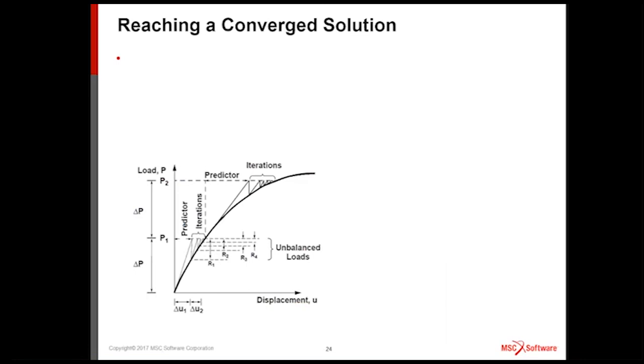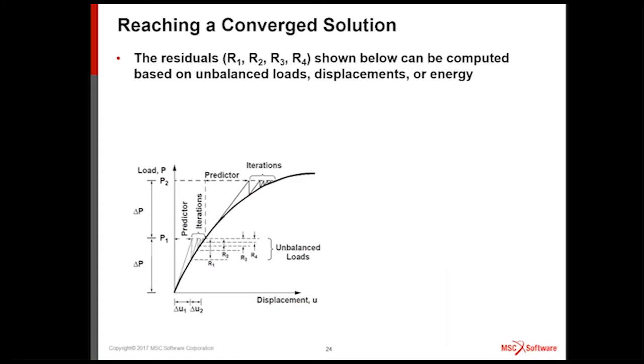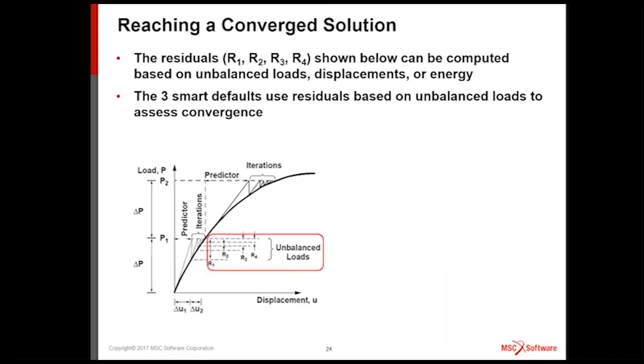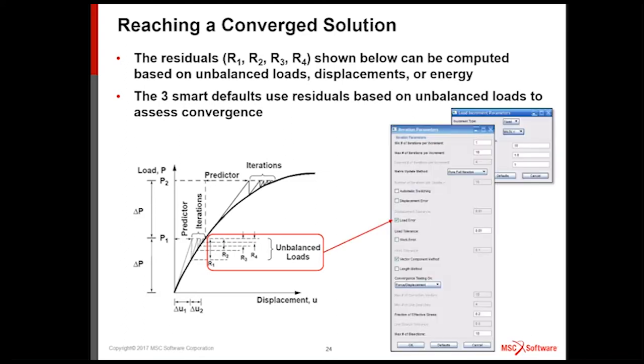Now, let's look at a very important concept here. How to reach a converging solution. When your job doesn't converge at the end, what's happening is the residuals are too high. So let's revisit this curve. But this time, let's focus on these residuals, R1, R2, R3, R4. Nastran can treat them as unbalanced loads or unbalanced displacement or unbalanced energy. They're all available for you. More knobs and switches and dials for you to choose. But for the smart defaults, we simplify it. We only offer you load. So these are now unbalanced loads. You can see them. So Nastran's going to decide, depending on how small these unbalanced loads are. When we get small enough below the threshold, the iteration has converged.